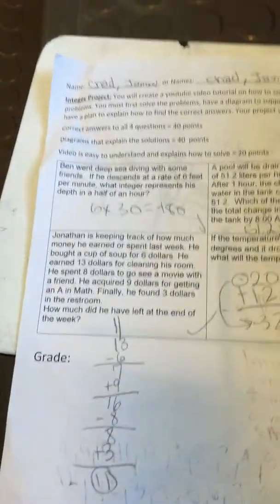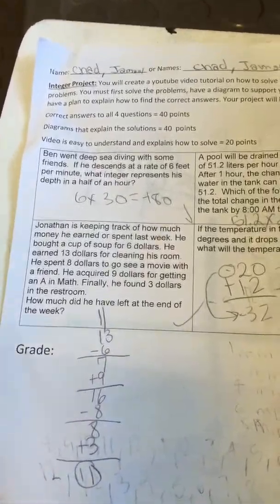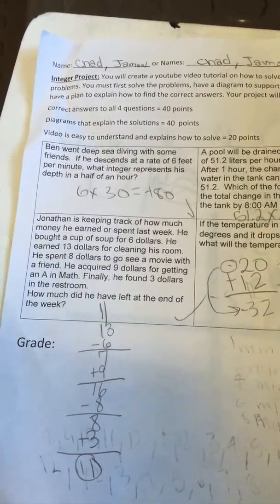VAMLT is diving with some friends. If he descends at a rate of 6 feet per minute, what integer represents his depth in half an hour?